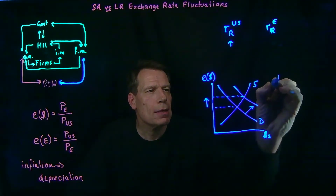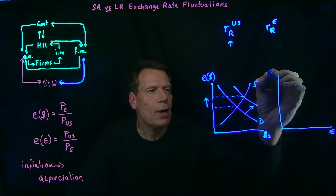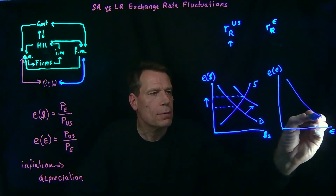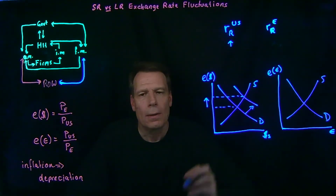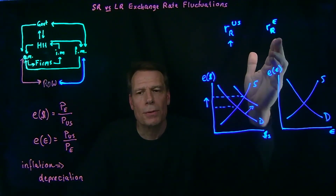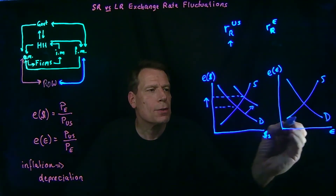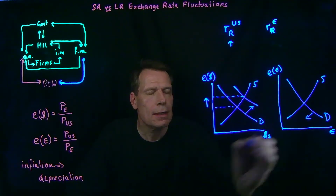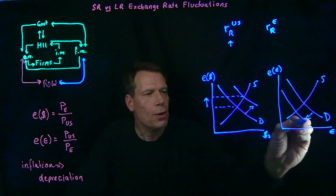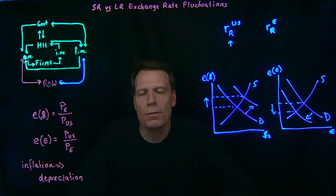We can also see what happens in the market for euros. If we put euros on one axis and the exchange rate of the euro on the other, we have a demand curve and a supply curve. When the US real interest rate increases, European bondholders want to switch to US bonds, so they have to buy US dollars, which means they have to sell euros. As they sell euros, we see a decrease in the demand for euros, and that causes a decrease in the exchange rate for euros — a depreciation of the euro.